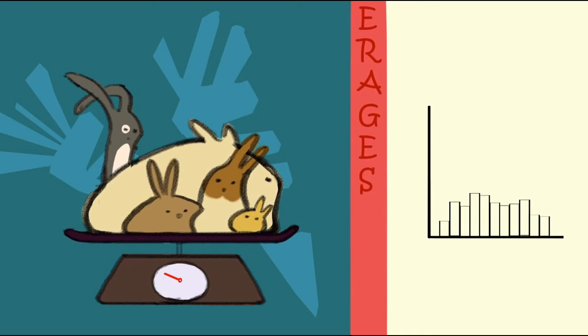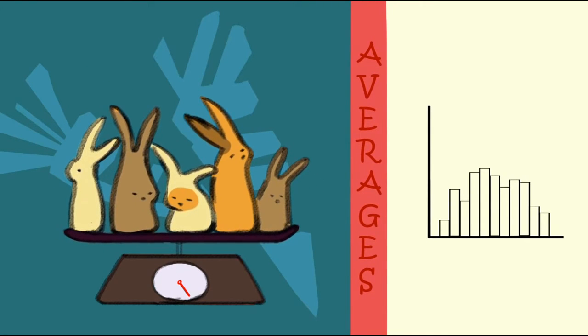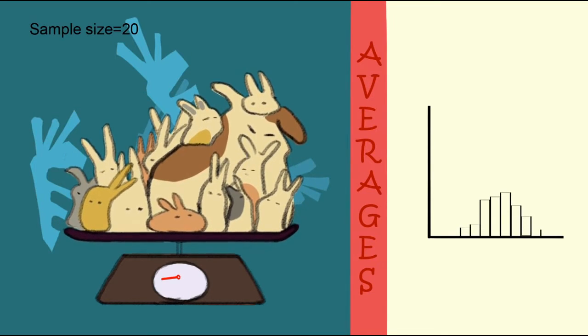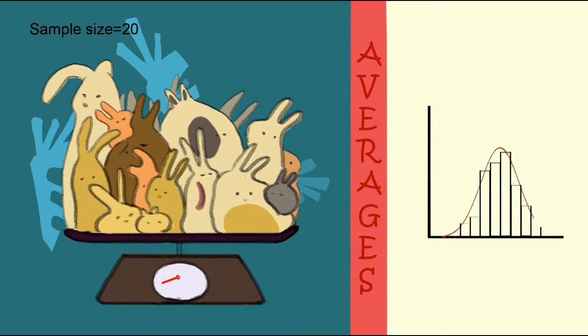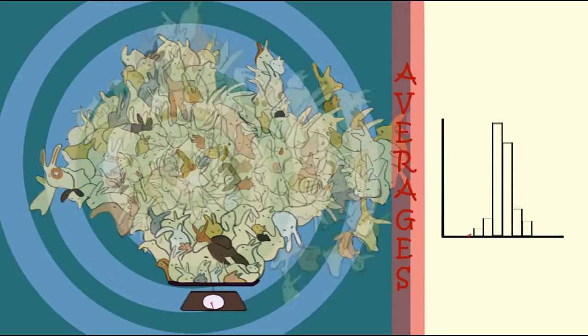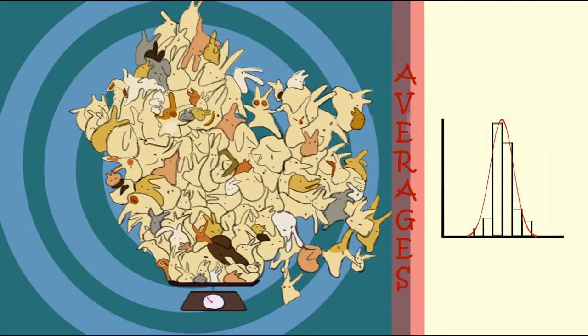He starts by weighing 5 rabbits at a time and finds that the distribution of the average is somewhat bell-shaped. Then he increases the sample size by weighing 20 rabbits at a time, and then 100. Surprisingly, as the sample size increases, the spread decreases and the distribution of average weights becomes more and more normal.